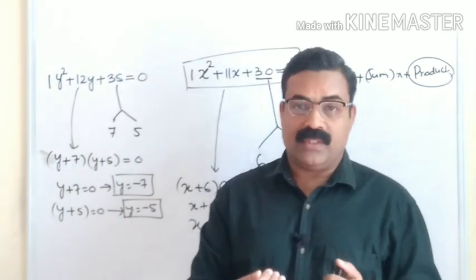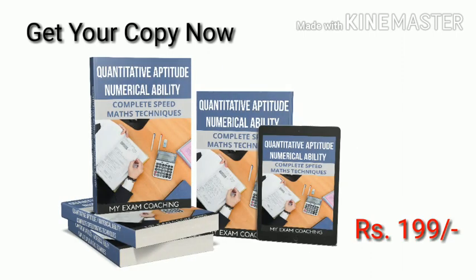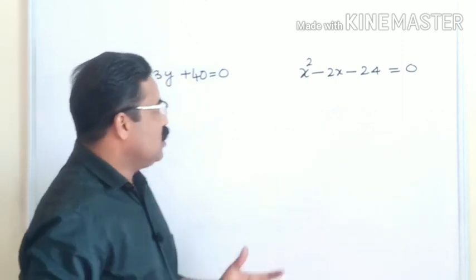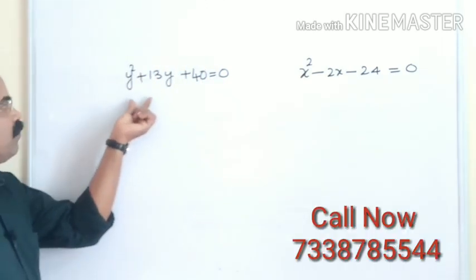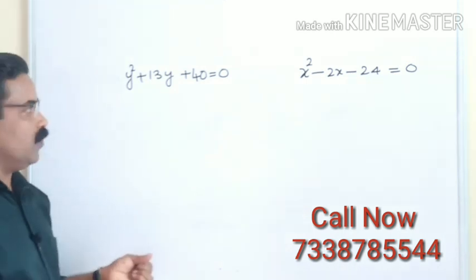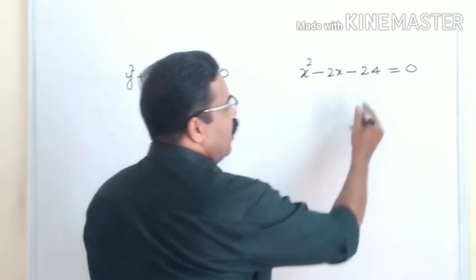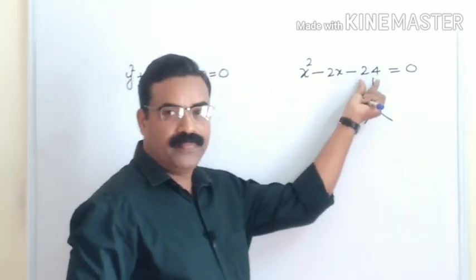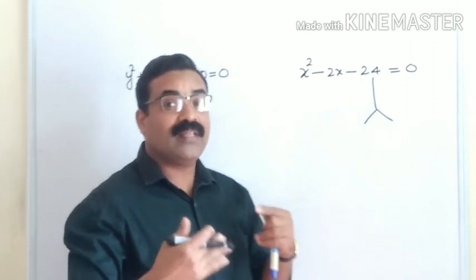I hope you understood the technique. Now we will go to more questions. The next question is x² − 2x − 24 = 0 and y² + 13y + 40 = 0. We solve these the same way. For x² − 2x − 24 = 0, the number is 24. Split 24 such that when you multiply you get −24 and when you add you get −2.